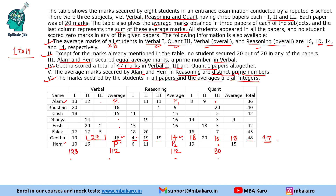Now let us look for students whose marks are given. Alam - marks are not given. Bhusha - nothing given. Kush - nothing much given. However, for Kush we can fill that the total will be 27: 17 plus 10 equals 27. For Falak, some marks are given: 17 plus 17 is 34, plus 5 is 39, so the average is 13. No other total is directly given.